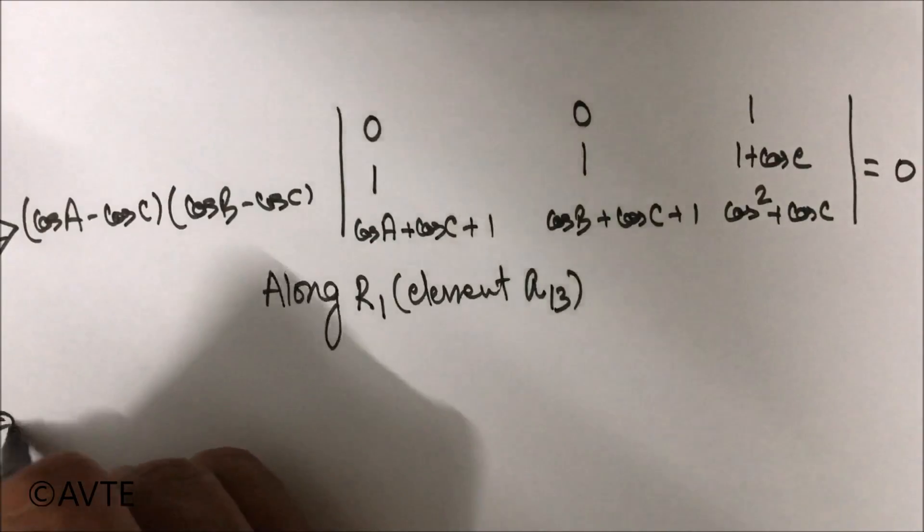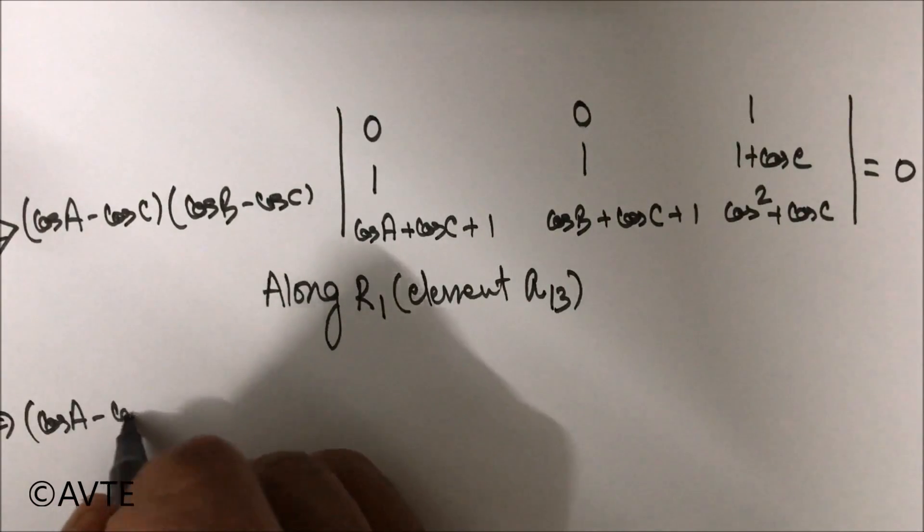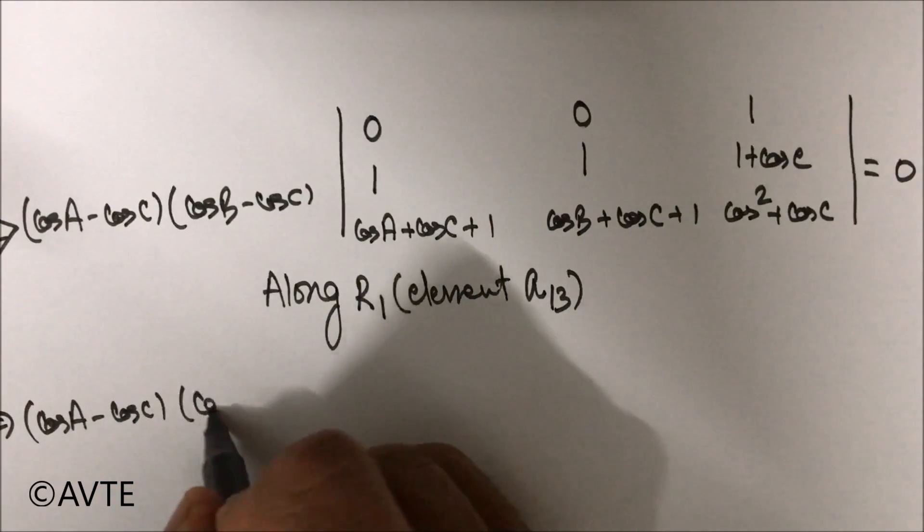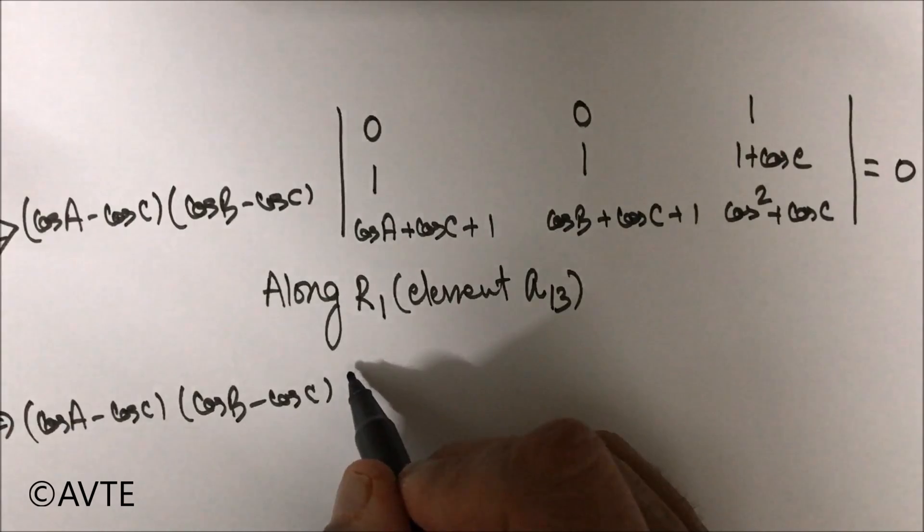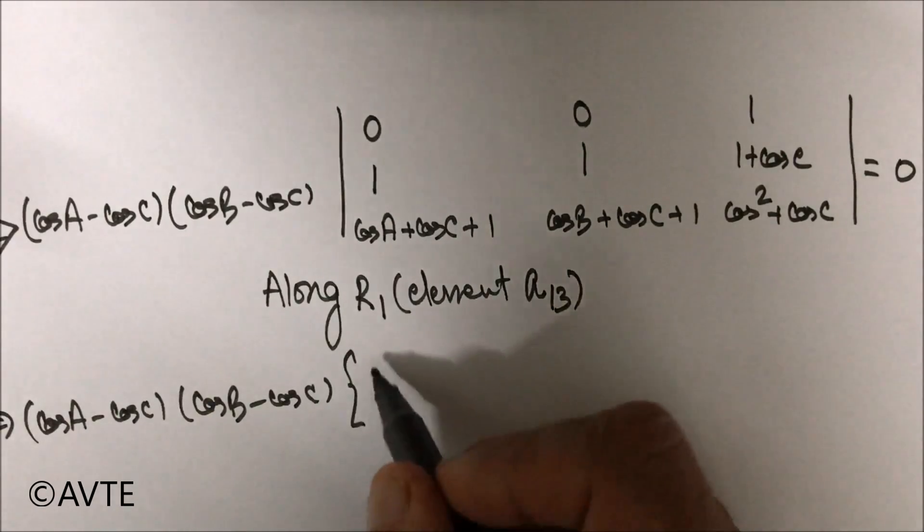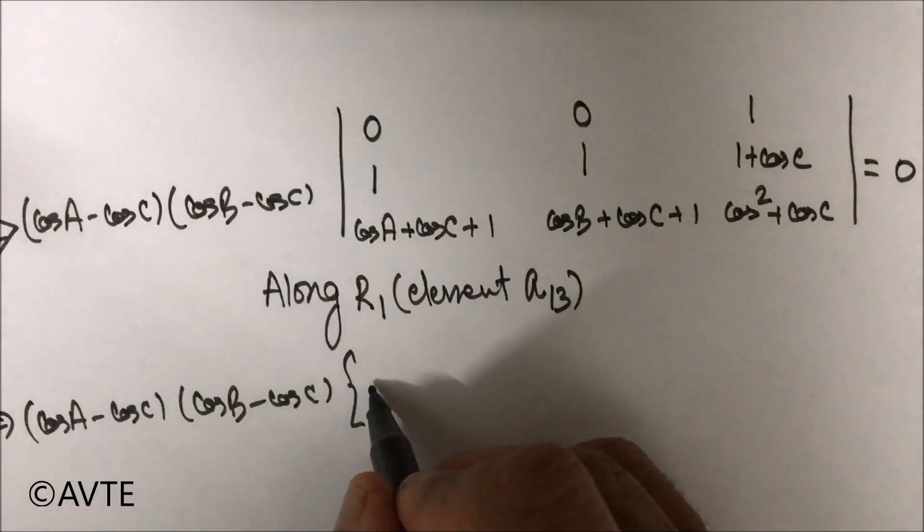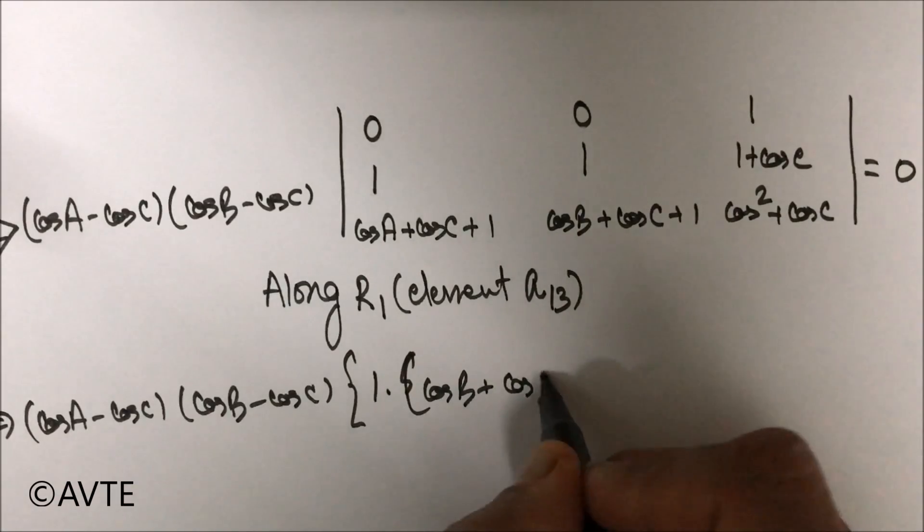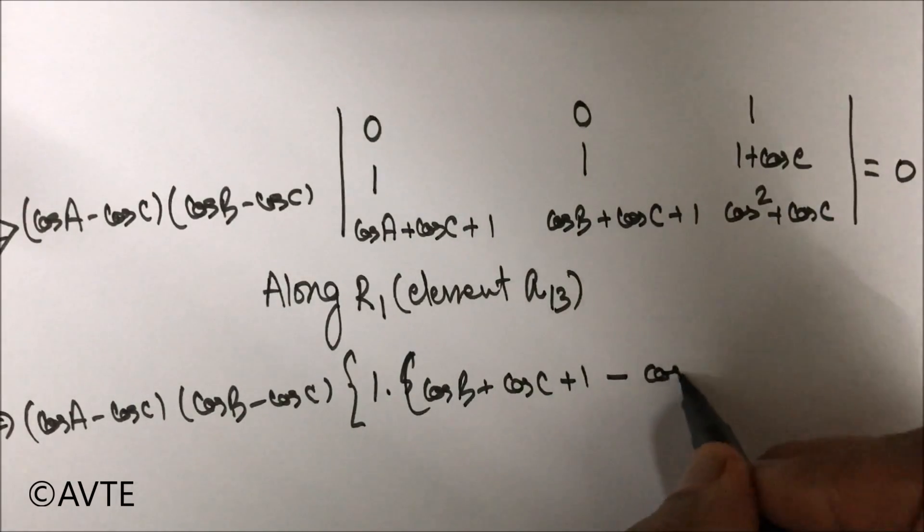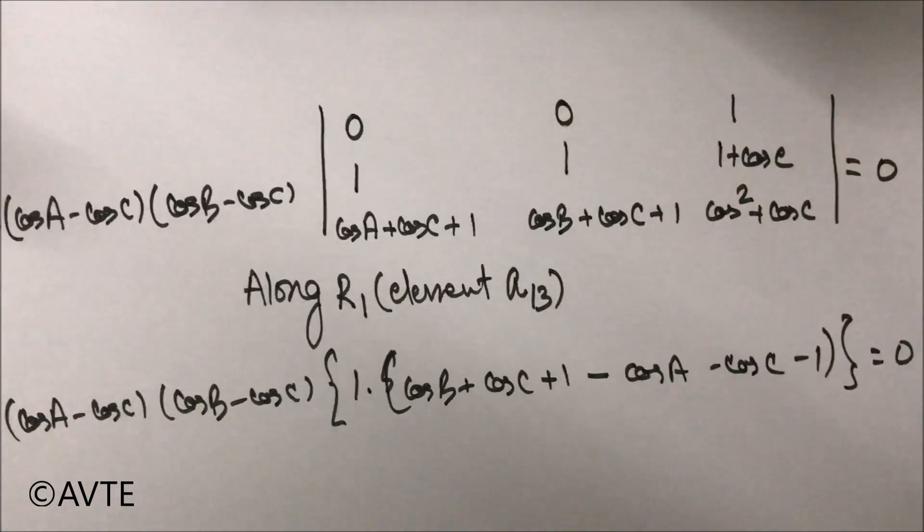So what do we get? So we get simply this into this determinant, that is one, equal to 0.